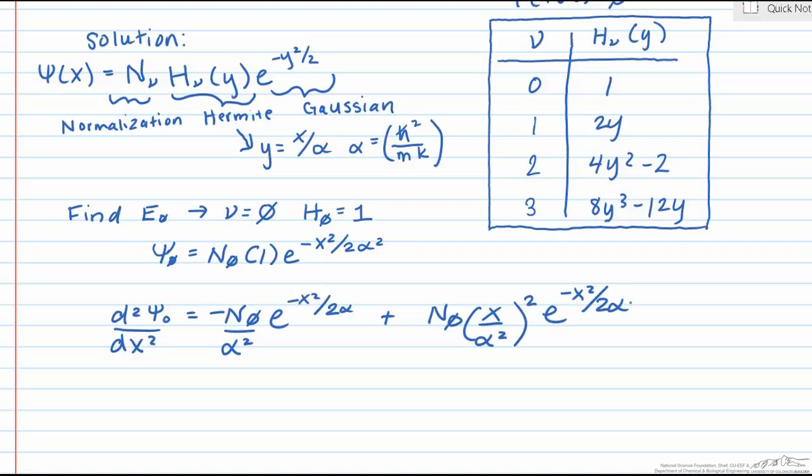Now if we do a little rearranging of our terms here, we see that the second derivative with respect to x of our wave function is equal to minus 1 over α² times our wave function plus x² over α⁴ times our wave function.